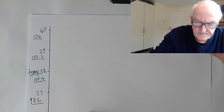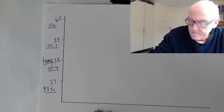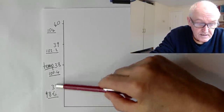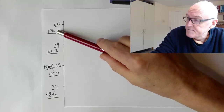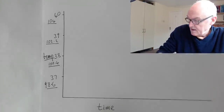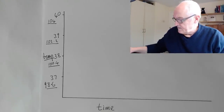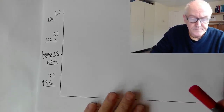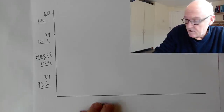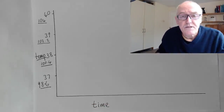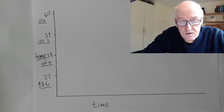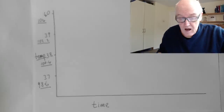Now here we have body temperature — 37, 38, 39, 40 degrees centigrade — and these are the equivalents in Fahrenheit up there. And here we have time along here. Now this red line here is going to indicate the set point of the hypothalamus. The hypothalamus is the part of the brain that controls body temperature, at the base of the brain. It's all controlled from this area called the hypothalamus.